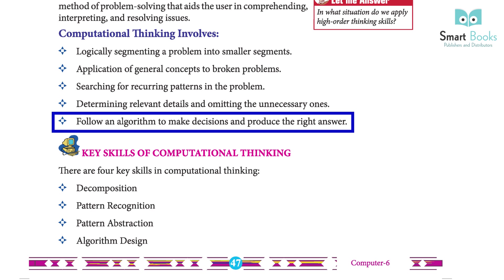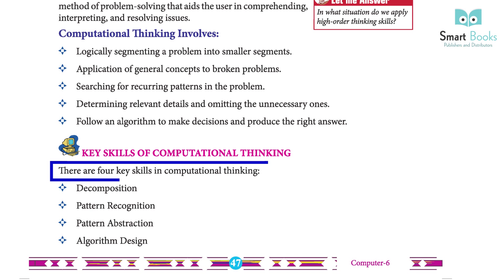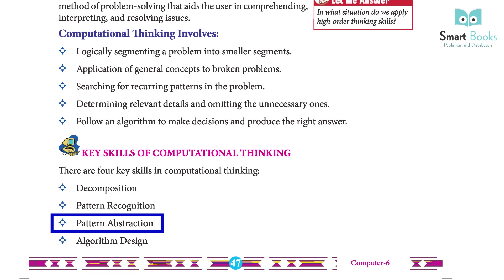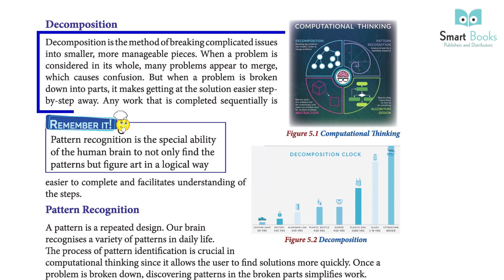Follow an algorithm to make decisions and produce the right answer. Key skills of computational thinking: there are four key skills — decomposition, pattern recognition, pattern abstraction, and algorithm design. Decomposition is the method of breaking a complicated issue into smaller, more manageable pieces.